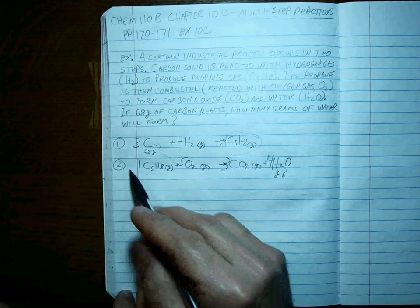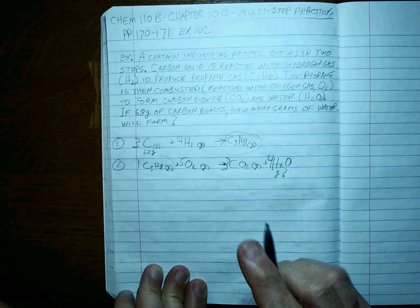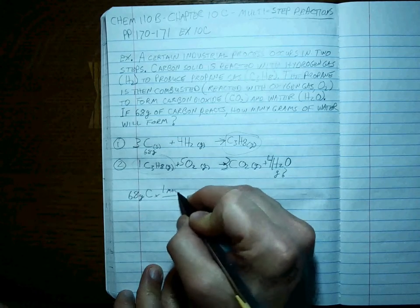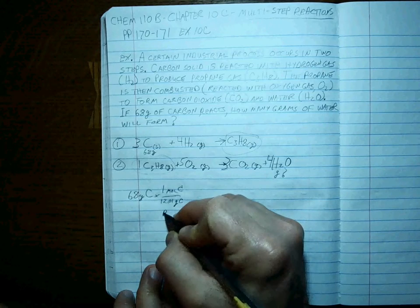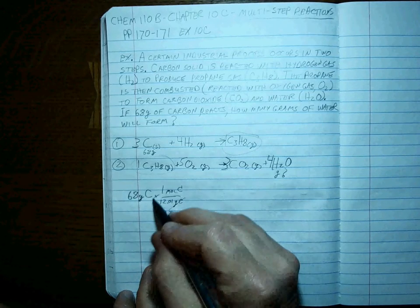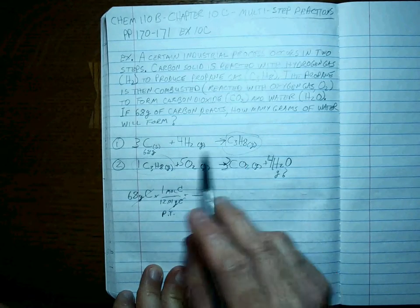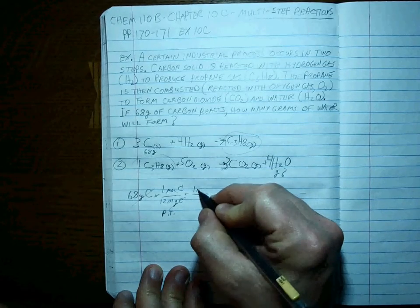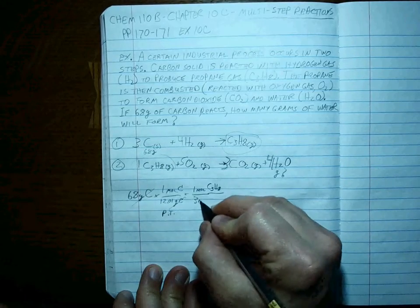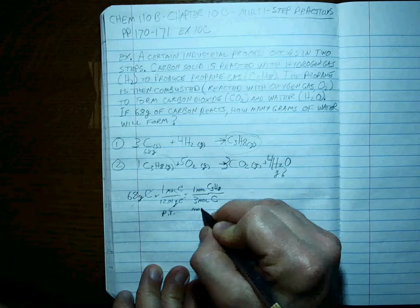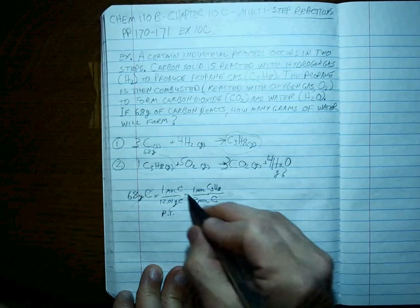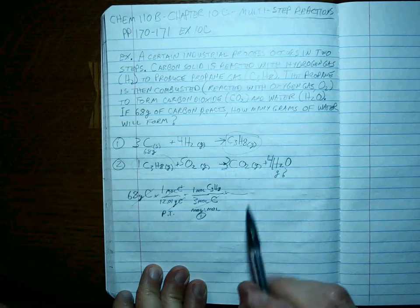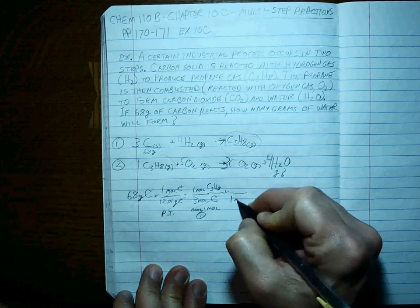If there's two reactions, we're going to have two mole-to-mole ratios. The rest of it is just the way we've done it all along. Start with our first number, 68 grams of carbon. Convert to moles using the periodic table. The grams cancel. We're left at moles. We have to make this stuff first before we can react it with oxygen to make the water. So that's our first mole-to-mole ratio from the first reaction. There's one mole of the propane for every three moles of the carbon. Mole-to-mole ratio, step one.